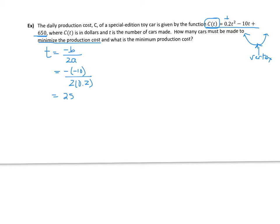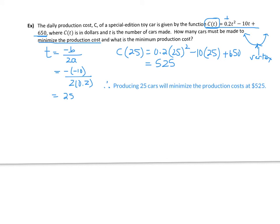And to actually find that minimum cost, we're going to evaluate the cost at 25 cars. So 0.2 times 25 squared minus 10 times 25. So I'm just replacing the t with the 25 and solving for that production cost. And when I solve for that production cost, I get 525. So therefore, if they produce 25 cars, they will minimize their production cost at a cost of $525. So I have my therefore statement written down now.